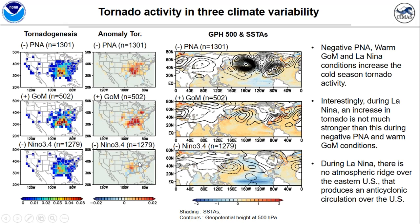This is the tornado genesis and tornado anomaly in the negative PNA case, warm Gulf of Mexico case, and cold Niño 3.4 (La Niña) case. The number at the right of each title is the sample size. All three cases increased cold season tornado activity, especially the negative PNA and warm Gulf of Mexico cases. Interestingly, during La Niña, the increase in tornado activity is not much stronger than during the negative PNA and warm Gulf of Mexico cases.